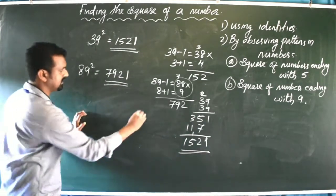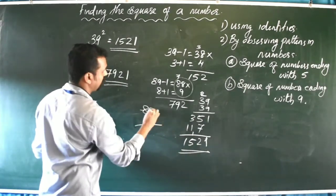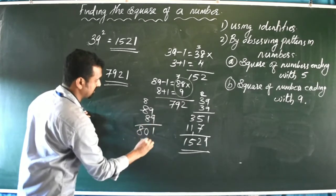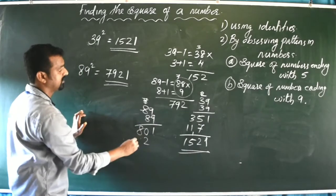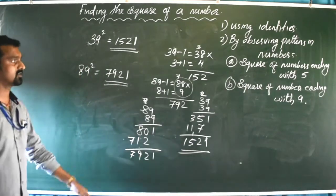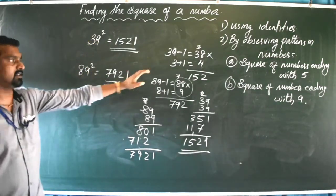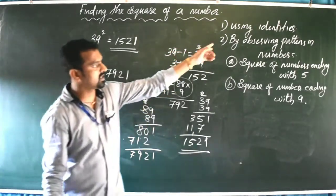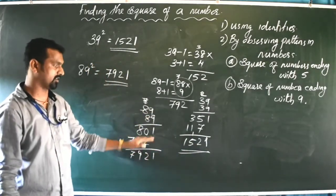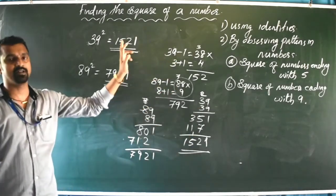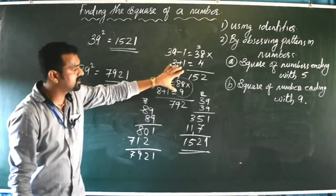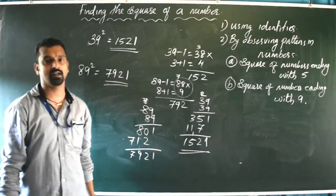We can verify by multiplying 89 × 89 directly, which also gives 7921. So if the last digit is 9, we can easily find the square using this method — by observing patterns in numbers, without multiplying directly. Remember: if the question asks to find the square by observing patterns, use this method to get the marks.